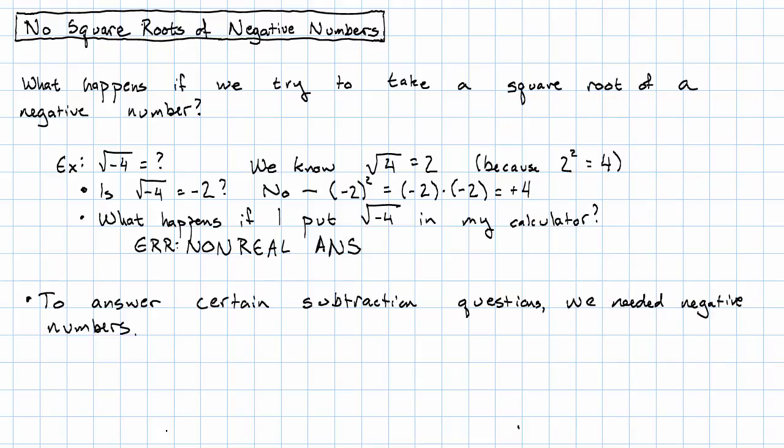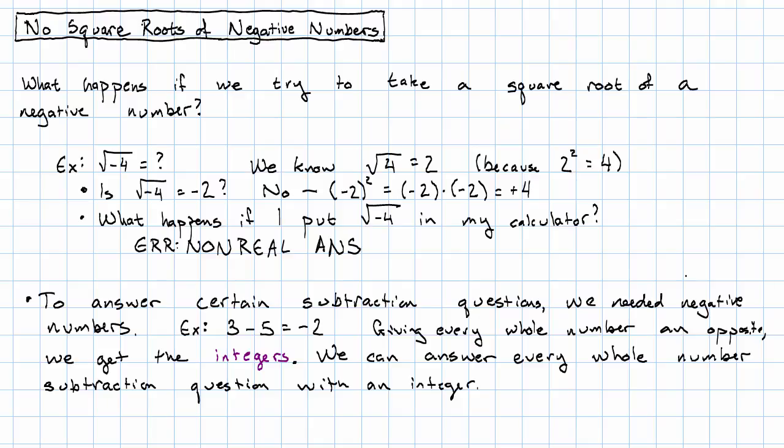To answer certain subtraction questions, we needed the negative numbers. For example, when we wanted to take 3 minus 5, that gave us negative 2. When we put together the positive whole numbers with their negatives, we have the integers. Any subtraction question that we can ask can be answered with an integer.